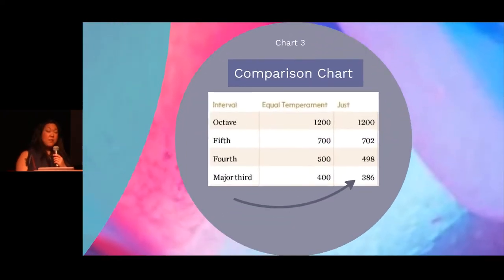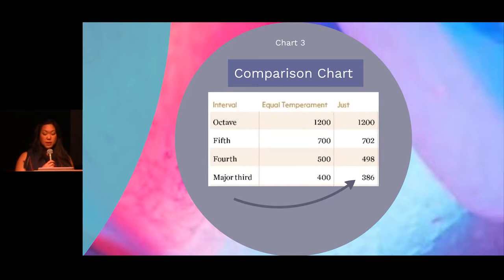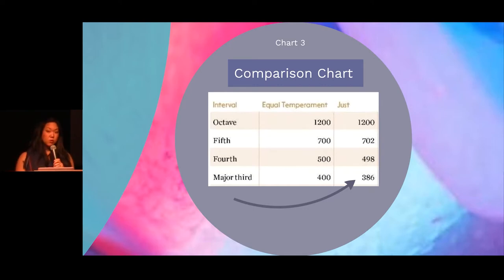So we have another comparison chart. If you look at the very bottom, the major third is made up of four semitones in equal temperament, so that's 400 cents. But in just, we subtract 14 cents to get 386.